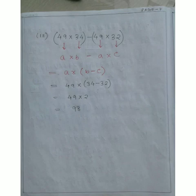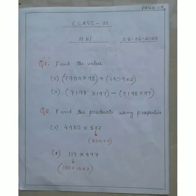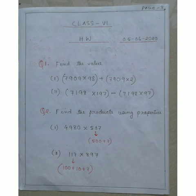Question 3: 49 × 34 − 49 × 32. Both terms have 49 in common, so assume A = 49, B = 34, C = 32. So A×B − A×C = A×(B−C) = 49 × (34−32) = 49 × 2 = 98.